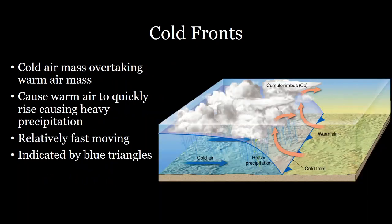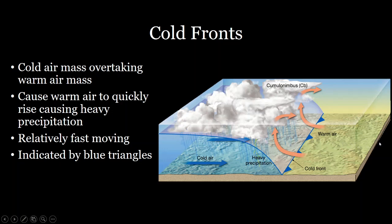Cold fronts are indicated by a blue line with blue half triangles on a standard weather map. It's a cold air mass moving toward a warm air mass, causing adiabatic lifting and cooling and the formation of cumulonimbus or thunderclouds. Cold fronts are often associated with very heavy rainfall and tend to move faster than warm fronts.